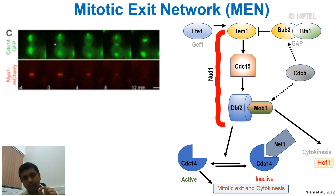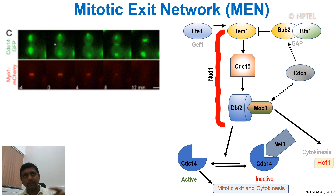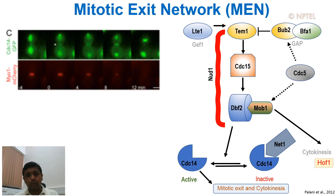The moment CDC14 localizes to the cytoplasm, that is where exit of mitosis is initiated — by activating CDH1, an APC/C proteasome component that specifically recognizes the mitotic cyclin and sends it for degradation. At the same time, CDC14 also activates Sic1, the CDK inhibitor, further downregulating CDK activity. While doing all this, CDC14 also goes to the division site where physical separation is happening, activating cytokinesis by dephosphorylating certain critical substrates — removing inhibitors and activating components that initiate actomyosin ring contraction followed by septum formation.